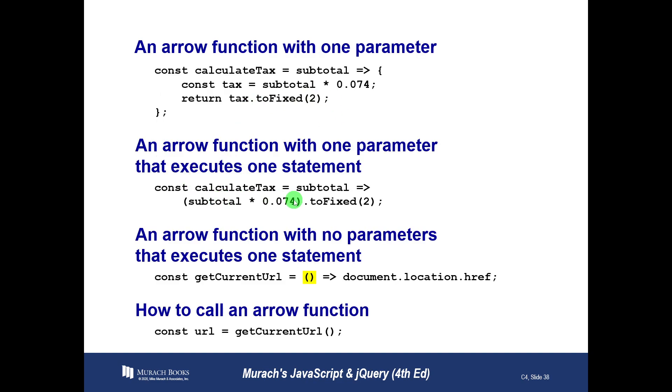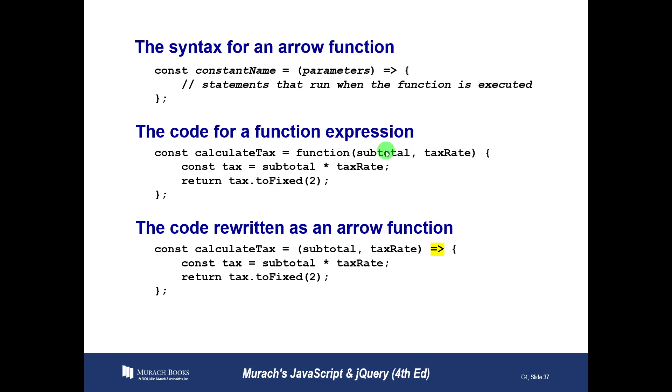These are parameters. These are the things inside of our functions. They're the variables that exist inside of our functions. Subtotal and tax rate inside of our functions are called parameters. When we call a function, we pass it arguments, and the arguments get stored in the parameters.